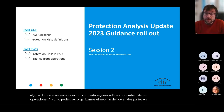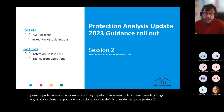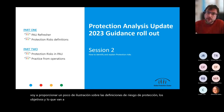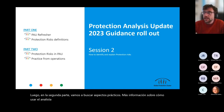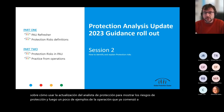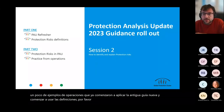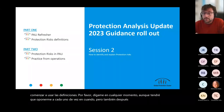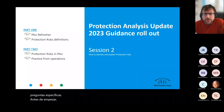We organized today's webinar in two parts. In the first part, we're going to do a very quick refresher of last week's session, and then I'll provide an illustration on the protection risk definitions, objectives, and what you're going to find in the guidance. In the second part, we'll look at practicalities — how to use the protection analysis update to show the protection risks, and some examples from operations that have already started applying the new guidance.